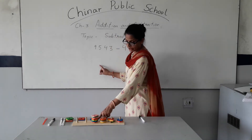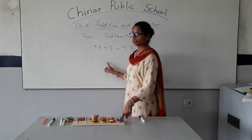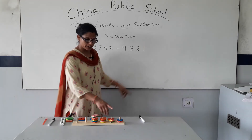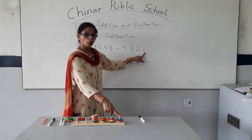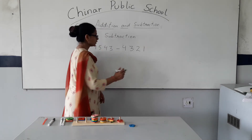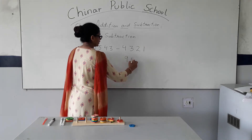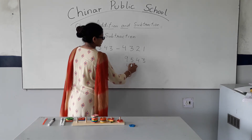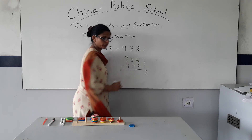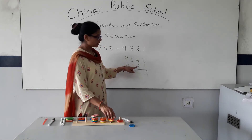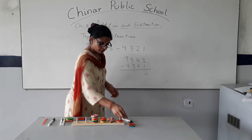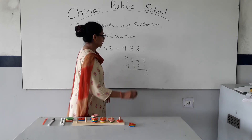So the number 9543 is arranged. Now, what do we have to subtract? We have to subtract 4321. We will start from the ones place. On the ones place, we take out one, so how many are left? Two. From three, I have taken out one, so two is left. Now on the tens place, we take out two — one and two. I have taken out two, so two markers are left on the tens place.